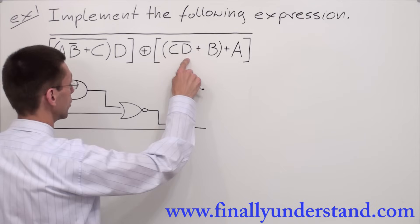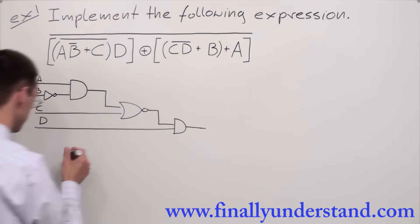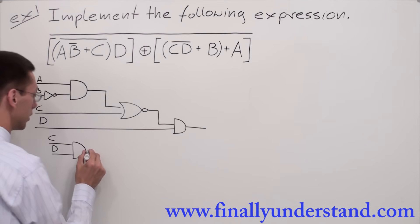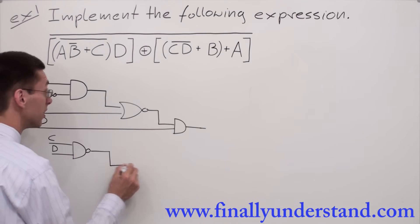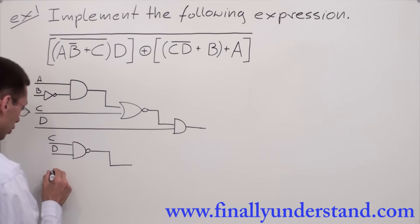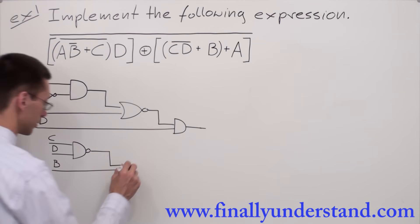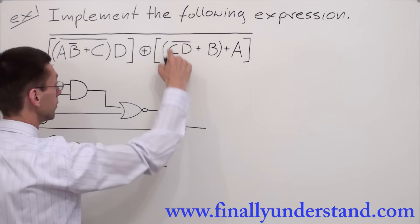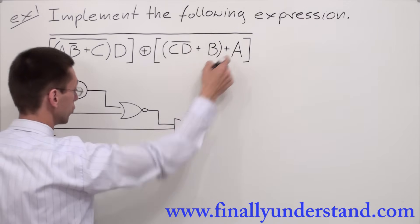Let's take a look at the second part of our expression. Inside of the parenthesis we have a NAND gate with two inputs: input C and input D. This NAND gate is ORed with input B. So this is my OR gate.